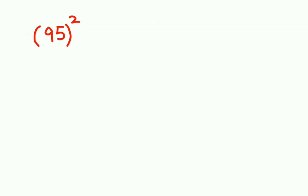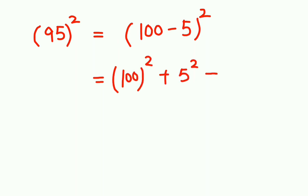Next dekhiye, 95 whole square. Isko hum kiasi lick lenge? 100 minus 5 whole square. Tho formula hum use ka sakte hai. First term 100 ka square plus 5 square minus 2 into 100 into 5.